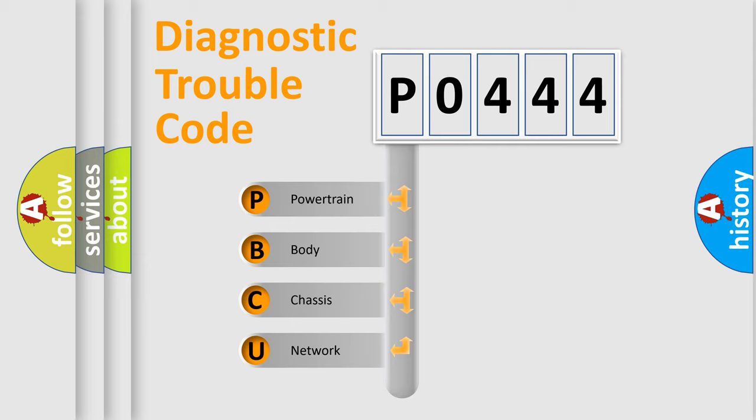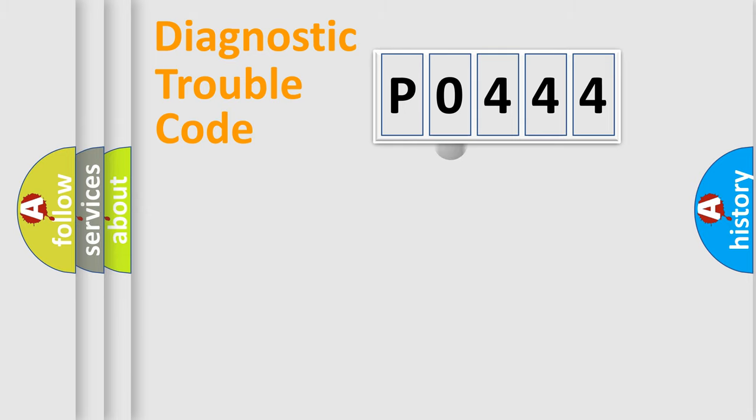We divide the electric system of automobile into four basic units: powertrain, body, chassis, and network. This distribution is defined in the first character code.